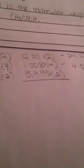Next, we'll do the amount of hydrogens that are in the atom. 1.008 times four gives us 4.032. And then we have 15.999, which is oxygen, times two. And that gives us 31.998.